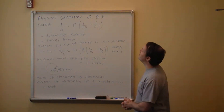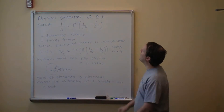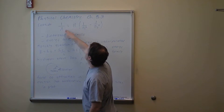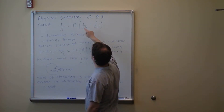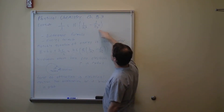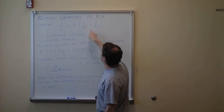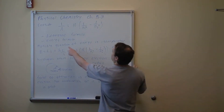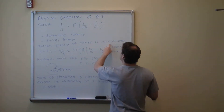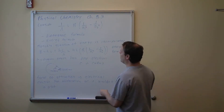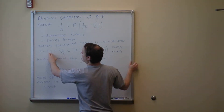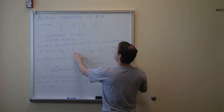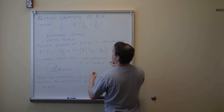Continuing on Physical Chemistry, Chapter 18, Section 3 — the Bohr model of a hydrogen atom. Remember the formula 1/λ = R(1/n₁² − 1/n₂²). This is a difference formula in terms of energy, and it incorporates Planck's quantization because of the n terms. We have E = hν = hc/λ = hcR(1/n₁² − 1/n₂²).